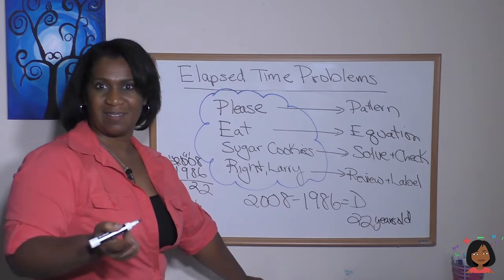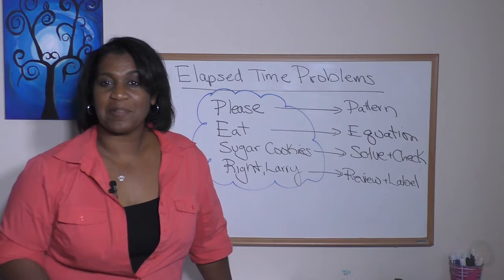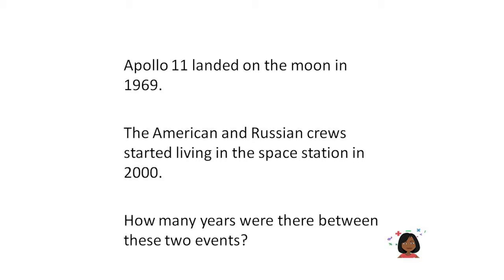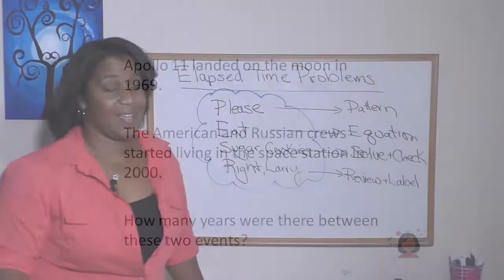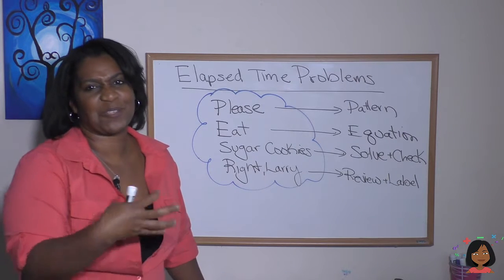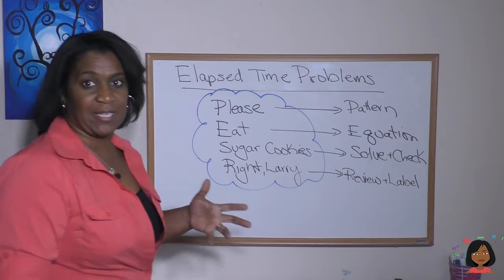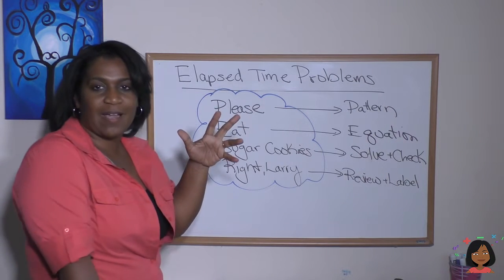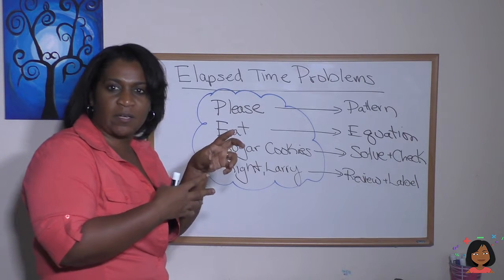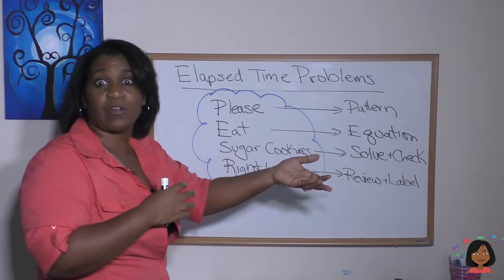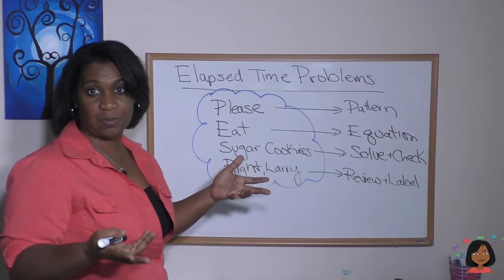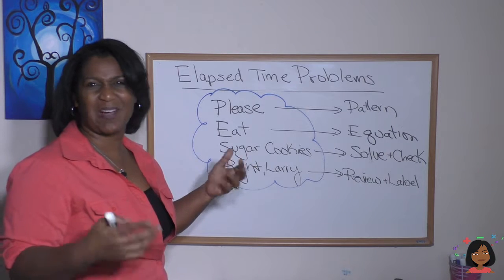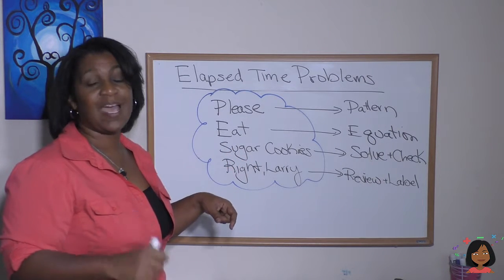All right, here's your next problem. Apollo 11 landed on the moon in 1969. The American and Russian crews started living in the space station in 2000. How many years were there between these two events? Sounds like an elapsed time problem to me, but let's go through our checklist here to make sure we've got it. The P in Please Eat Sugar Cookies Right Larry, the P is for Pattern. So what this pattern is telling us is that in one year there was a landing on the moon, and in another year, a later year, there was a landing at the space station with two crews. Does it sound like there might be a time difference there? It does. And an elapsed time problem is what kind of pattern? A subtraction pattern.